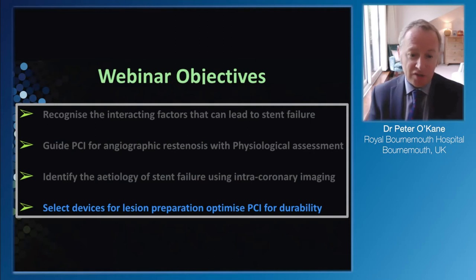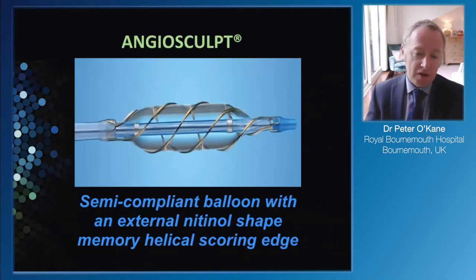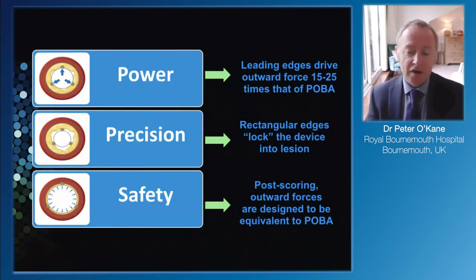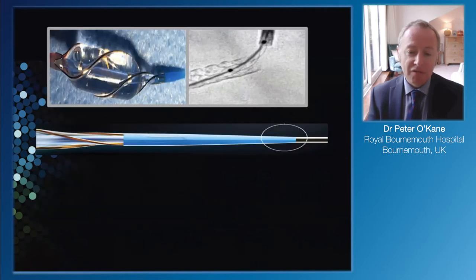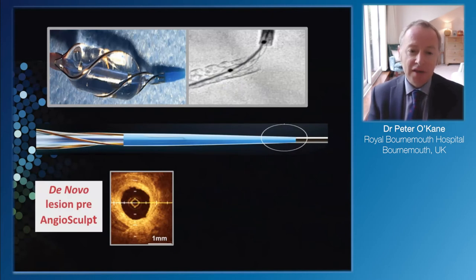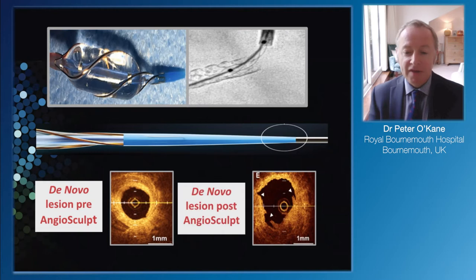Let's talk about all the different preparation techniques we have available. First, the Angiosculpt - a semi-compliant balloon with a nitinol band around it. I like this device - it's a good tool. All scoring balloons are quite useful, but this one is particularly deliverable. It works well in terms of expanding without slipping. Often non-compliant balloons will slip in a slippery lesion such as neointimal hyperplasia. It's very safe - you can go up to high pressure, just undersizing by about half a millimetre. It's got a very deliverable nose cone and you can see the wire wrapped around on the clear stent imaging.